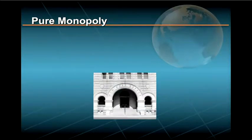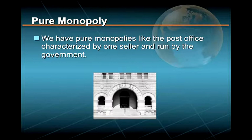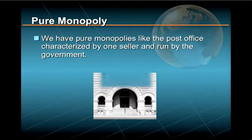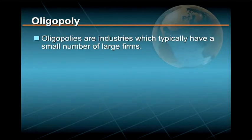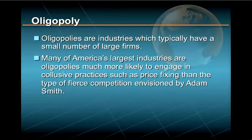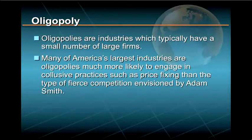At the other end of this mixed economy, we have pure monopolies like the post office, characterized by one seller and run by the government. In between these two poles of perfect competition and monopoly, there are numerous oligopolies, from the tobacco and chewing gum industries to automobiles and oil. Oligopolies are industries which typically have a small number of large firms, and many of America's largest industries are oligopolies, much more likely to engage in collusive practices such as price-fixing than the type of fierce competition envisioned by Adam Smith in his invisible hand.